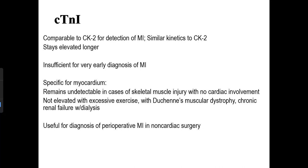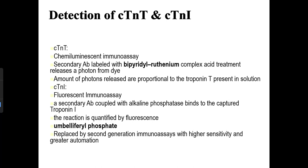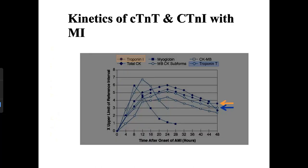cTnI is comparable to CK2 for MI detection with similar kinetics but remains elevated longer. It is insufficient for very early MI diagnosis but is specific for the myocardium and remains undetectable with skeletal muscle injury alone, excessive exercise, Duchenne muscular dystrophy, chronic renal failure, or dialysis. It is useful for diagnosing perioperative MI in non-cardiac surgery. Detection is by chemiluminescent assay for cTnT and bifluorescent immunoassay for cTnI.